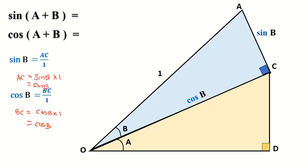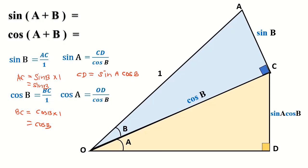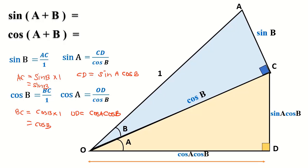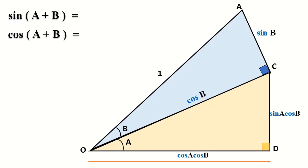Now look at triangle OCD. We have sine A equal to CD over cosine B, so CD equals sine A multiplied with cosine B. And cosine A equals OD over cosine B, so OD equals cosine A multiplied with cosine B.